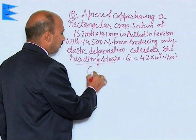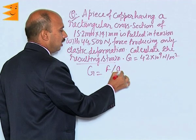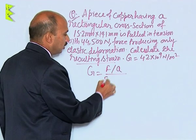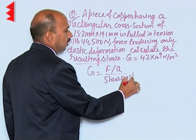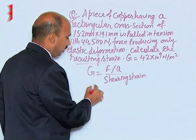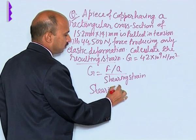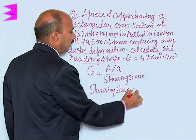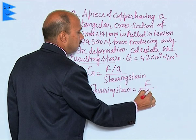We use the formula G = (F/A) / shearing strain. Rearranging, shearing strain = F / (A × G). We need to calculate the shearing strain using all the given values.